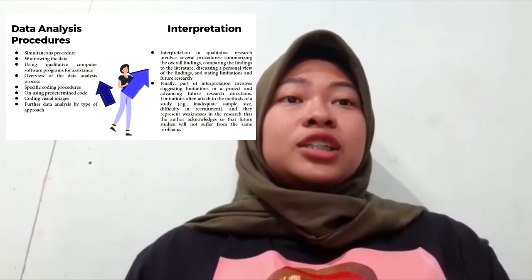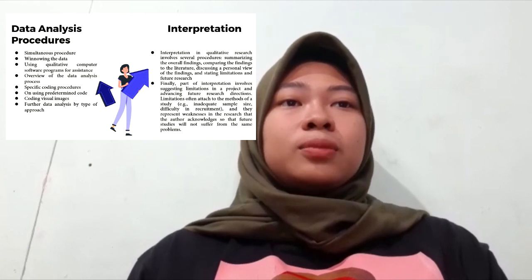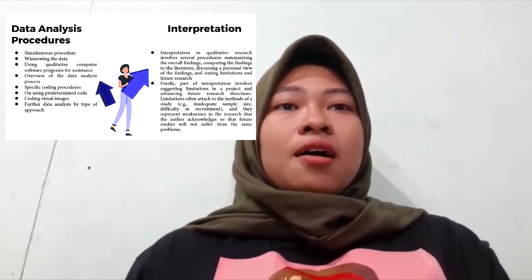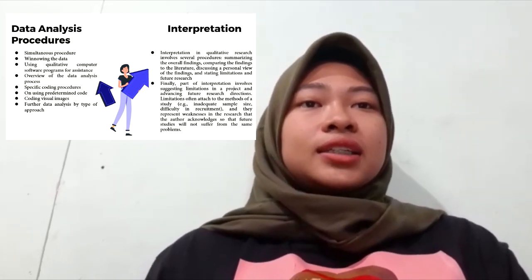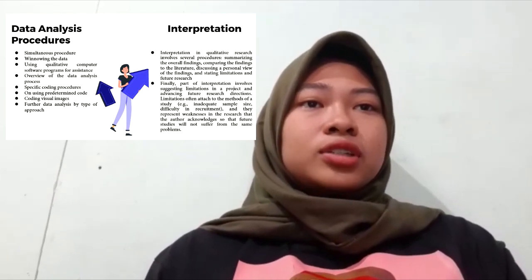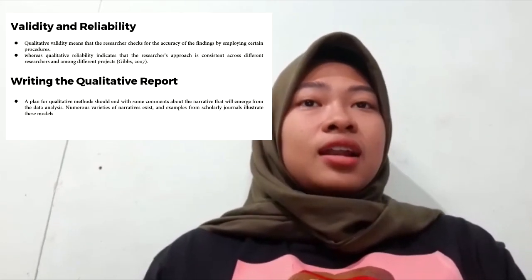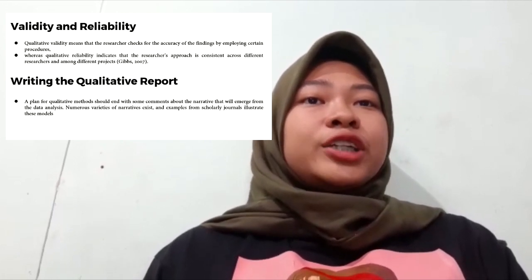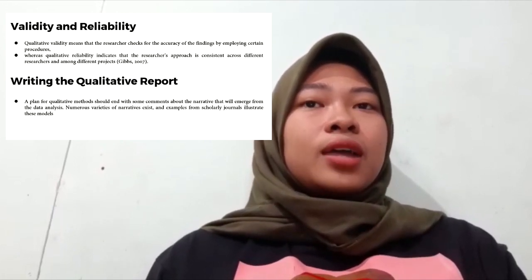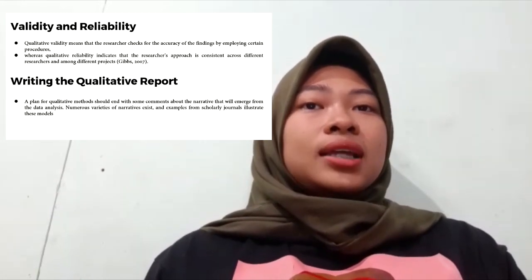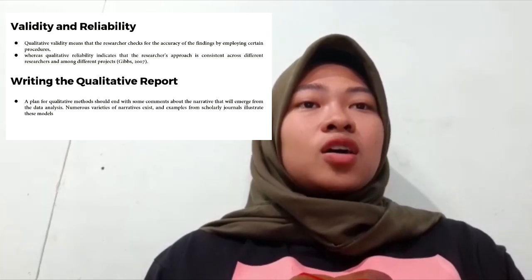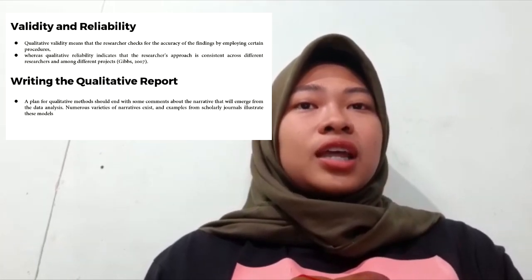Interpretation in qualitative research involves several procedures: summarizing the overall findings, comparing the findings to the literature, discussing a personal view of findings, and stating limitations and future research. Validity and reliability: Qualitative validity means that the researcher checks for the accuracy of the findings by employing certain procedures, whereas qualitative reliability indicates that the researcher's approach is consistent across different researchers and among different projects.